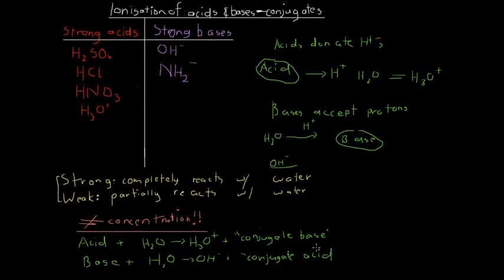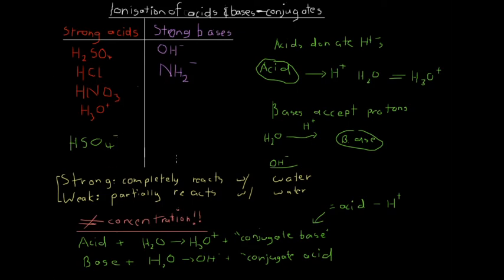A conjugate base is basically the acid minus one H+, minus a proton. So for example, if H2SO4 is the acid, then its conjugate base will be HSO4⁻. That's all it is — the formula of the conjugate base is simply the acid's formula with one proton removed.